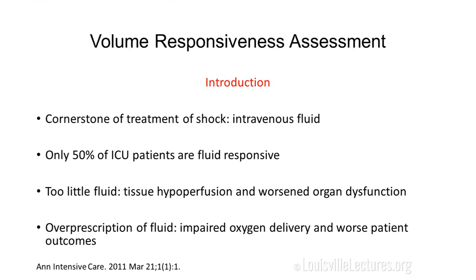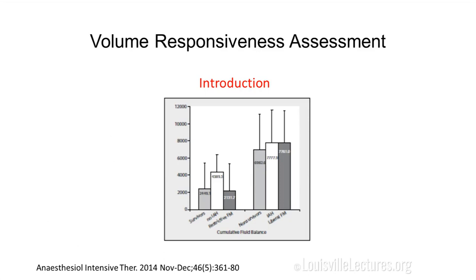Is fluid responsiveness important? Yes. Too little fluid will lead to tissue hypoperfusion and organ dysfunction. But too much fluid has been shown again and again to lead to worse outcomes — impaired oxygen delivery and worse patient outcomes. A meta-analysis showed that ICU survivors usually have a fluid balance a little more than 2 liters, whereas those who die usually have a fluid balance close to 7 liters.